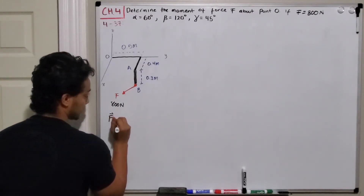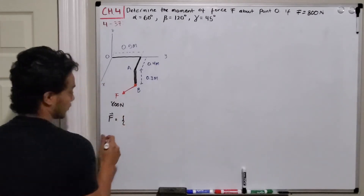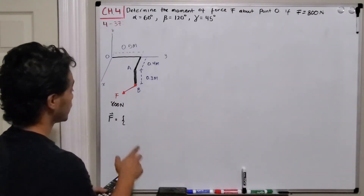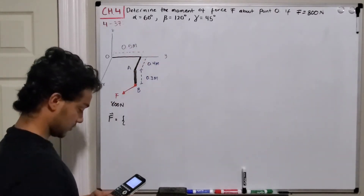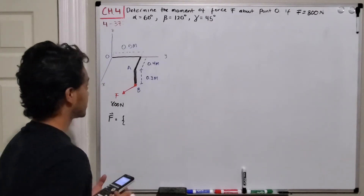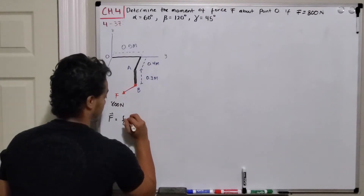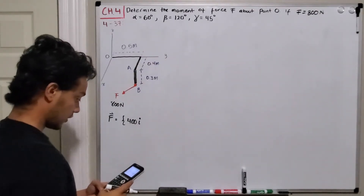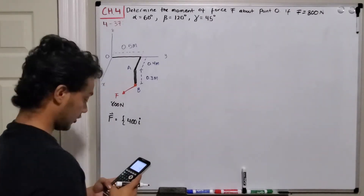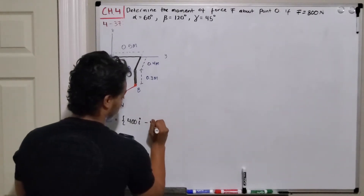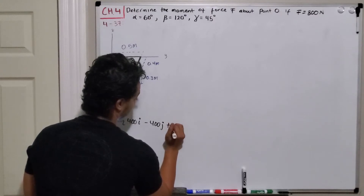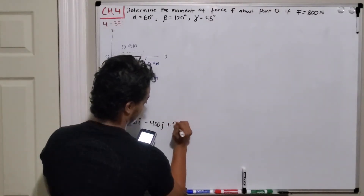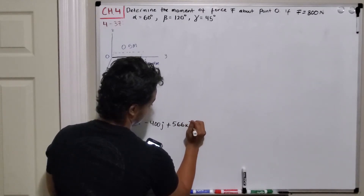So F in Cartesian vectors is going to be: for the x (i) direction, 800 multiplied by cosine of 60 degrees, which gives me 400 Newtons in the i direction. For the y direction, 800 cosine of 120 degrees gives me negative 400 in the j direction. And in the z direction, 800 cosine of 45 degrees gives me 566 in the z direction.